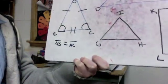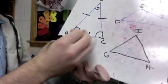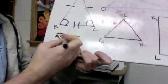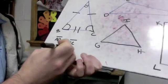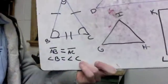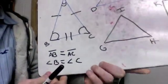That's something else they might do. To show those two are equal, we might write angle B is equal to angle C. Those are just things that you'll see.